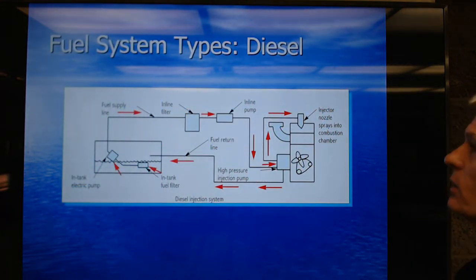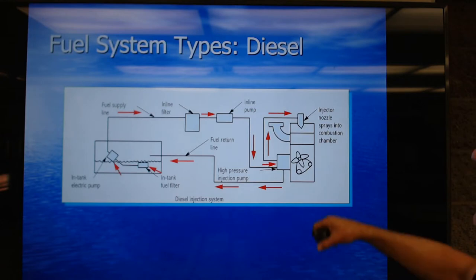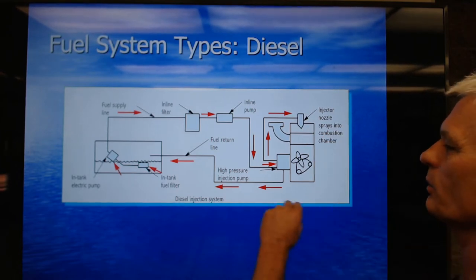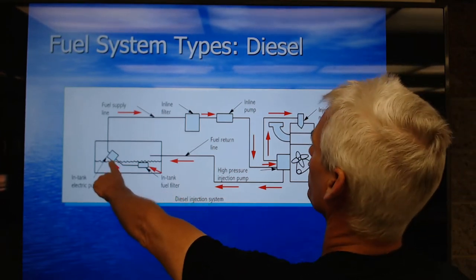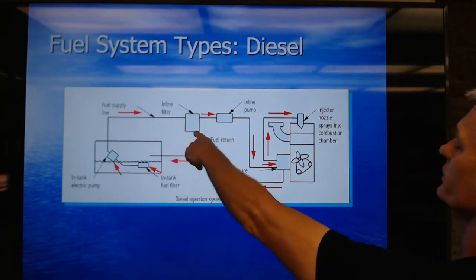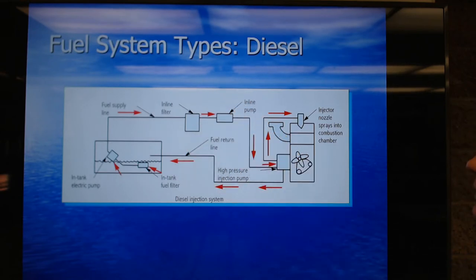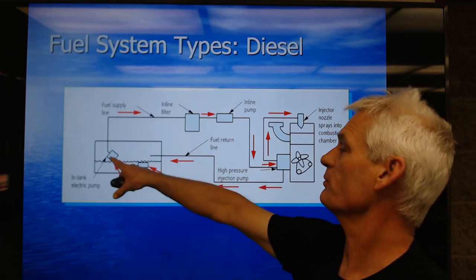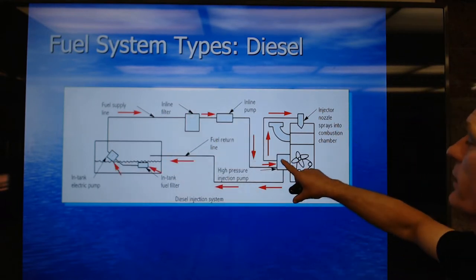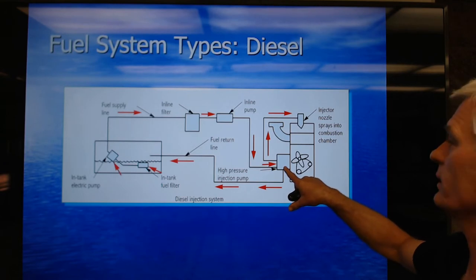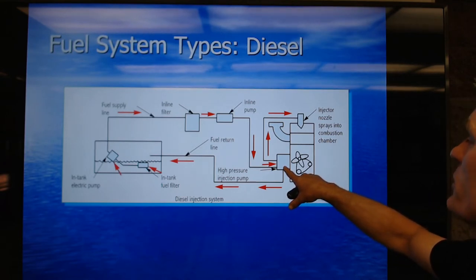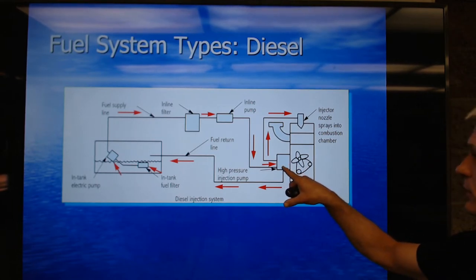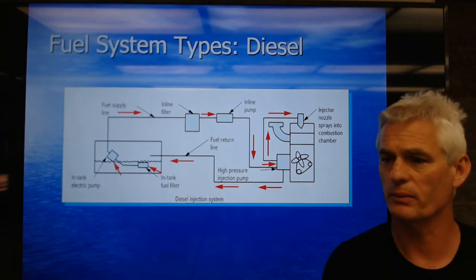In a diesel system, the injector nozzle goes directly into the combustion chamber. There's an electric pump — a lift pump pushing around 30 PSI — an inline fuel filter, and then a high-pressure injection pump. That high-pressure pump creates anywhere from 2,000 up to 10,000 PSI. These are mechanically driven, gear-driven, positive displacement pumps that make incredible pressure.